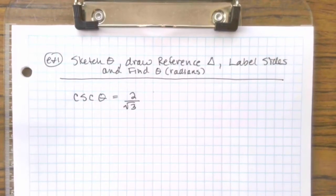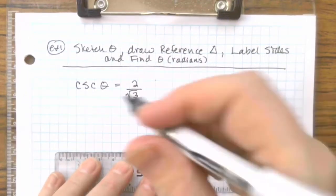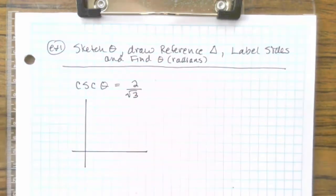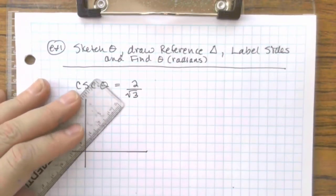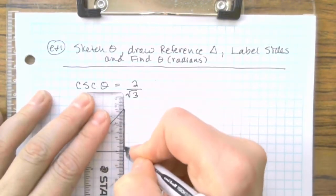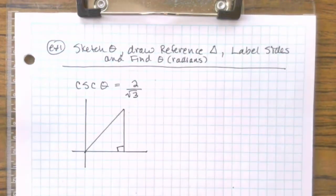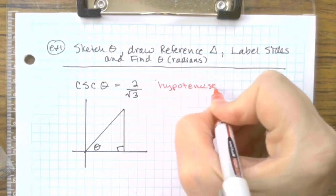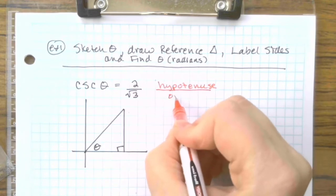For starters, cosecant is the reciprocal of sine. So if this is a positive 2 over radical 3, it's going to be where sine is positive, which is definitely in the first quadrant. So we're going to draw our first quadrant here. I'll make the other quadrants really small. I'm going to draw a reference triangle. It's a right triangle. Theta is there.